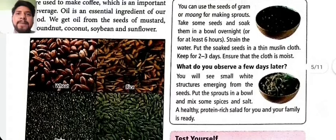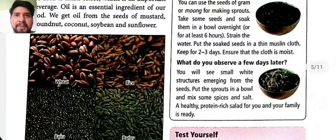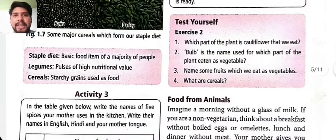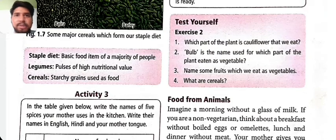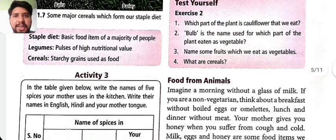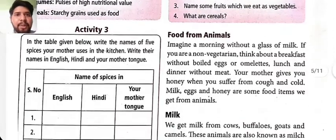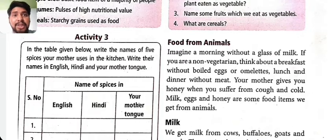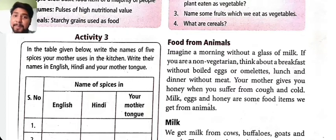Seeds of the coffee plant are used to make coffee. There are three types of staple foods: staple diet, legumes, and cereals. Staple diet items are basic food for the majority of people. Pulses are of high nutritional value. Activity: Write the names of five spices your mother uses in the kitchen in English, Hindi, and your mother tongue.